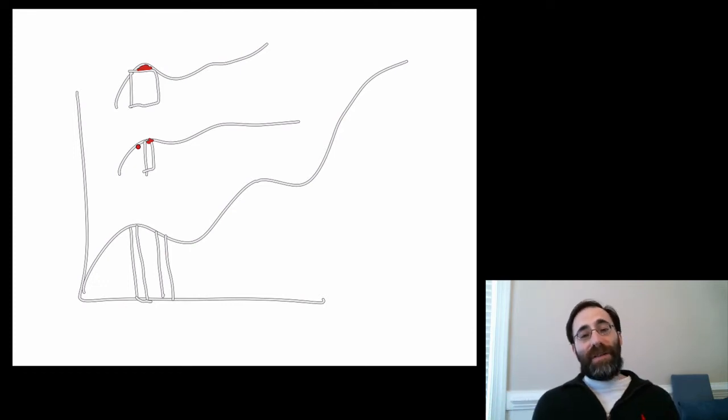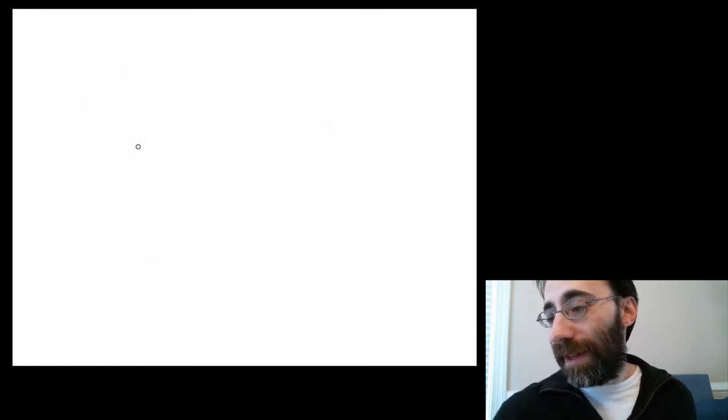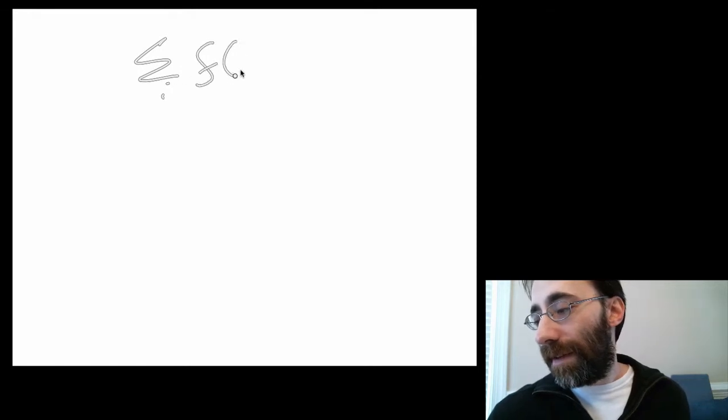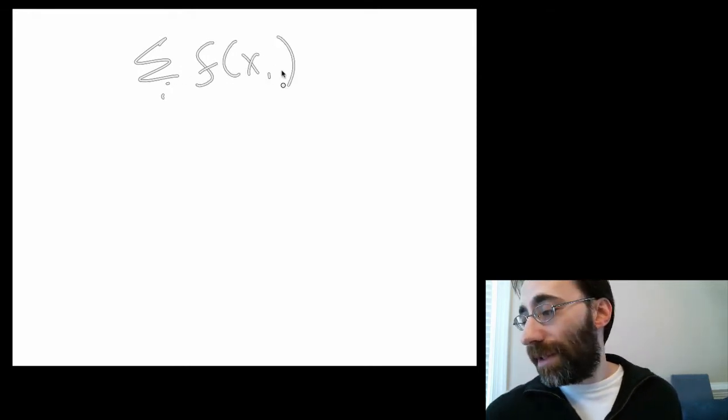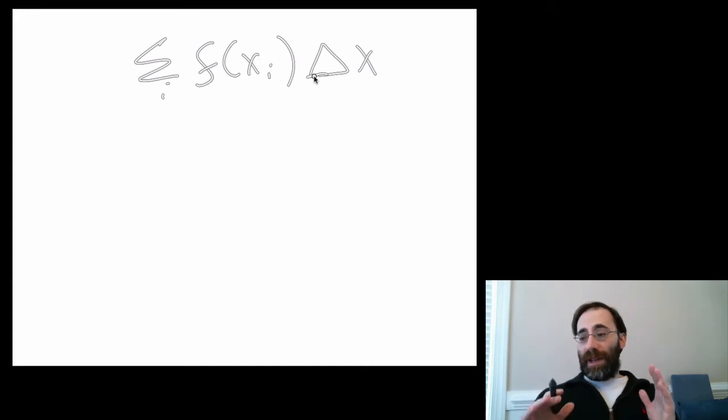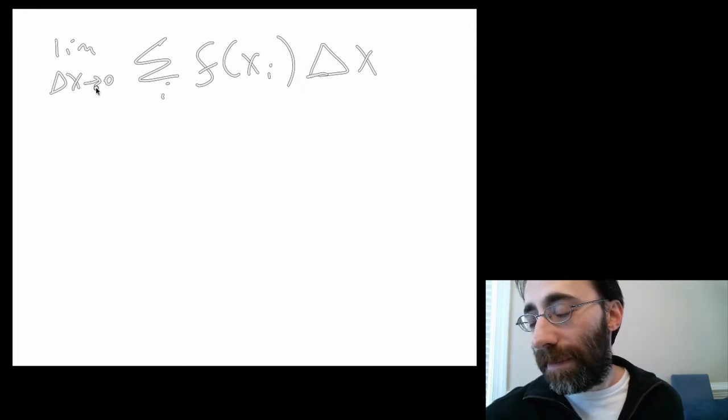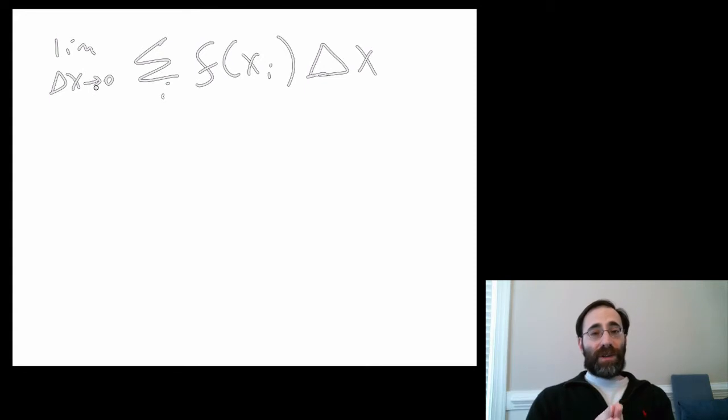The limit of the sum of the area of rectangles as the width of each rectangle goes to zero. So we take our function we did before, our sum we had before, rather. We call that look like this, the sum over i of the individual function values times each, and let's assume all the different widths are the same size. Take this thing, as this thing goes to zero. So the limit, as the width of the rectangles gets smaller and smaller and smaller, you get closer and closer and closer to the actual true area under the curve.